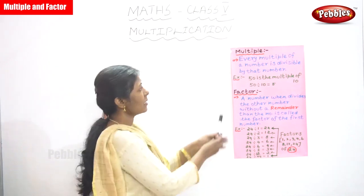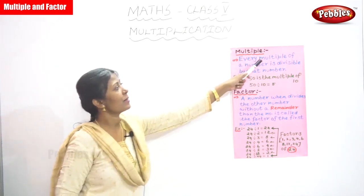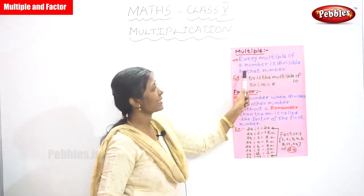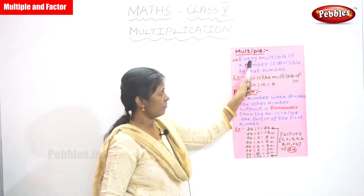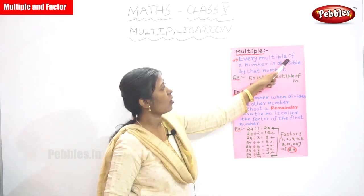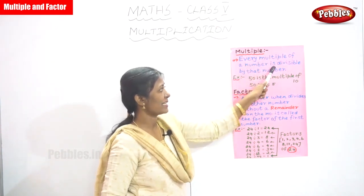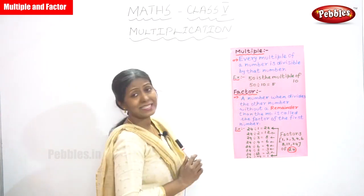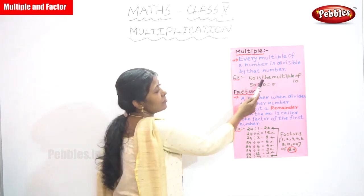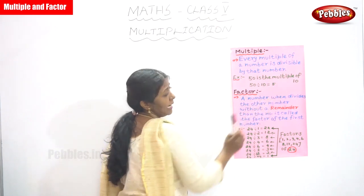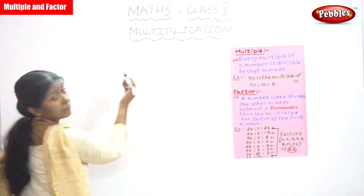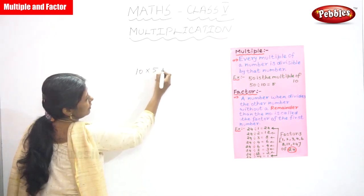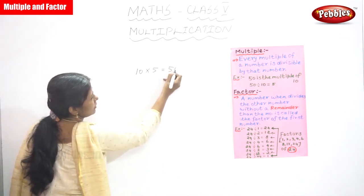Now we are going to see multiples. Every multiple of a number is divisible by that number. For example, 50 is the multiple of 10. I have already told you, 10 into 5 is equal to 50.